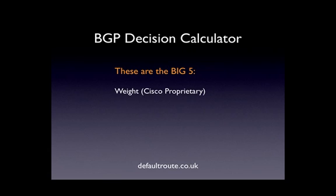The first one is Weight. Weight is Cisco proprietary — no other vendor supports this. If you've got a 100% Cisco network, just like EIGRP, then Weight might be for you. It's locally specific on the router that you configure it on. If you wanted to preference traffic coming in from one AS over another on the same router, Weight could be a choice. But it's not very extensively used, and people kind of stay away from it.